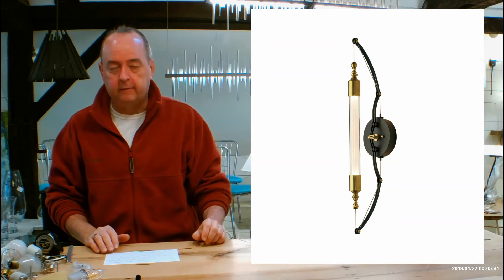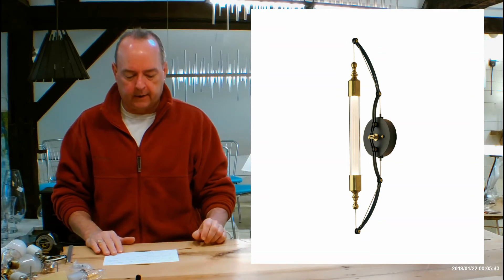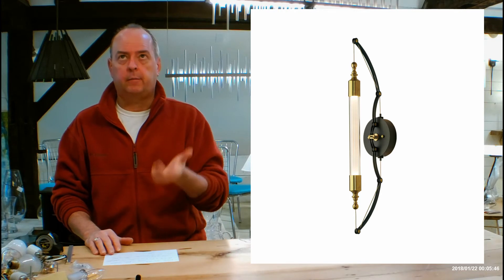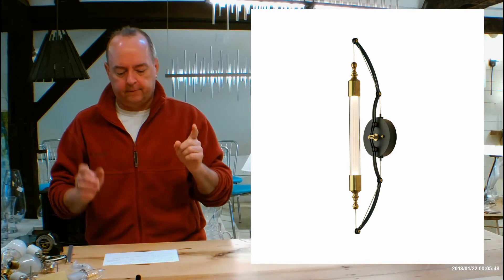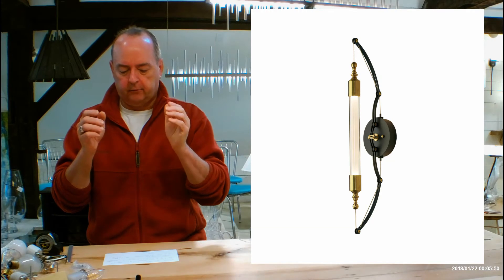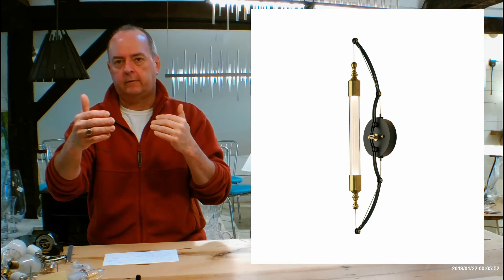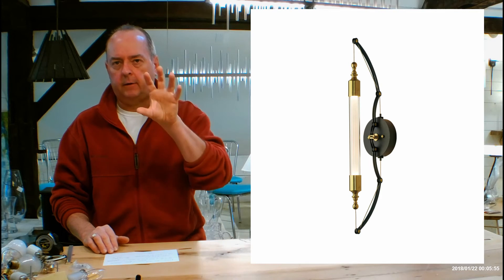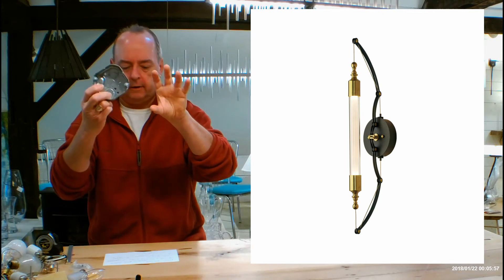This is the 207901 we're going to talk about now. It's 26.3 inches overall height from the bottom to the top of the fixture, 5.4 inches wide, projection out is going to be 6.7 inches.